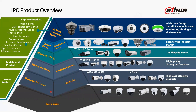We'll begin from the bottom of the triangle going upwards to the apex. At the bottom we have the entry series — the low-end products. The term 'low-end' does not mean these products won't give you surveillance security; it simply means they provide basic surveillance. They don't have the intelligent functions of higher-tier products, only a few AI features for daily surveillance.